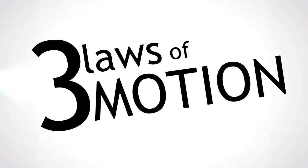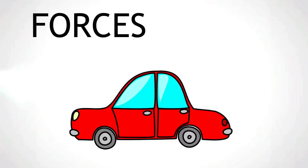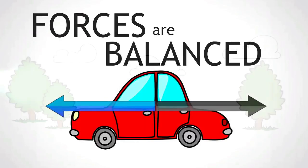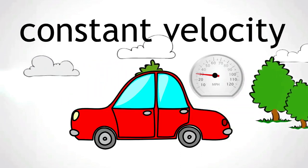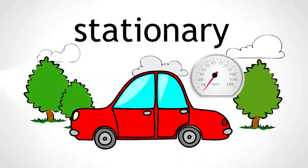The first law states that if all the forces acting on an object are balanced, there will be no acceleration, meaning either constant velocity or the object remaining stationary. But what do we mean by balanced forces? Let's look at the example of a horse.